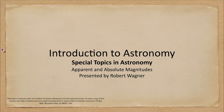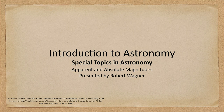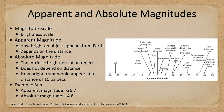Greetings and welcome to the introduction to astronomy. In today's special topic we are going to look at the difference between apparent and absolute magnitudes and try to understand how we measure the brightnesses of stars. The magnitude is a brightness scale used to measure stars, dating back thousands of years to the astronomer Hipparchus, who first grouped stars into groupings by brightness.